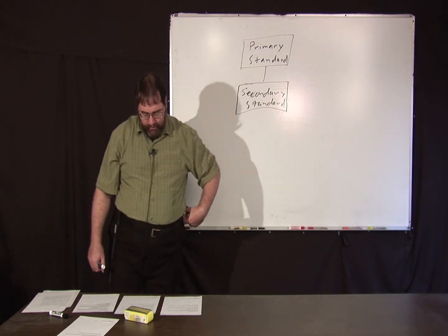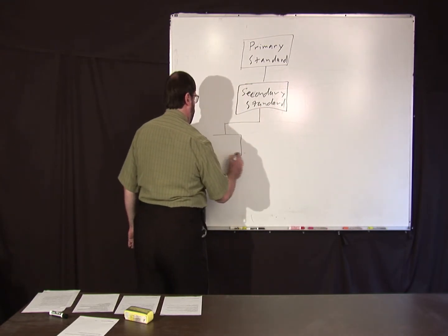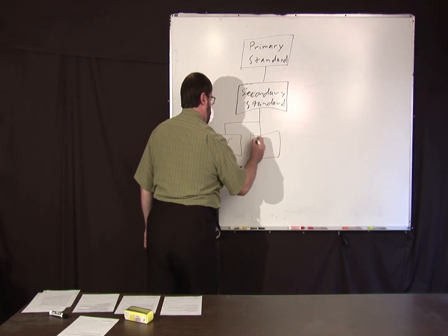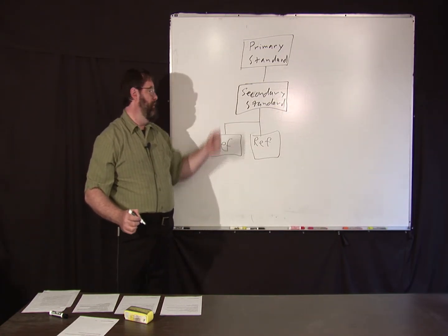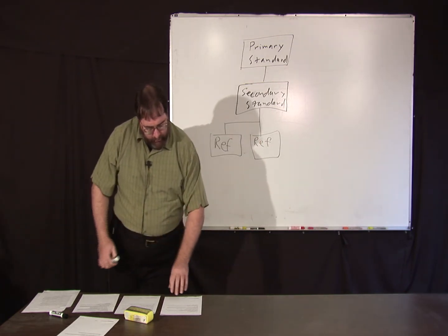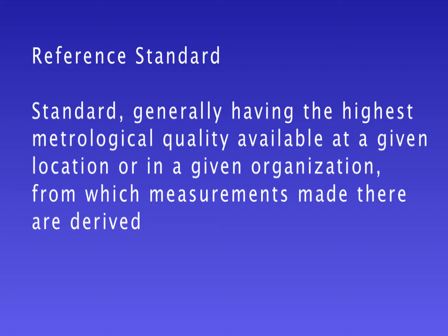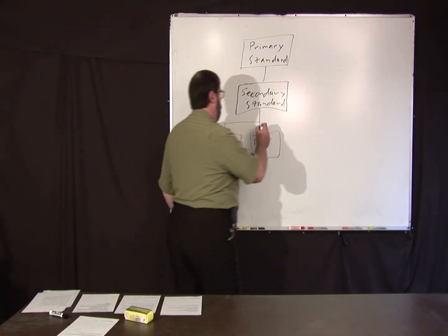And then there's lower-level standards that this might be used to calibrate reference standards, a whole bunch of them maybe. So, this might be, these might actually be done inside a national lab. This might be done in regional companies or something. A reference standard is defined as a standard usually having the highest metrological quality available at a given location or in a given organization from which measurements made there are derived. So, you have these reference standards out at other locations.